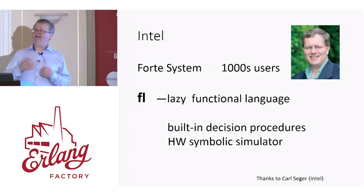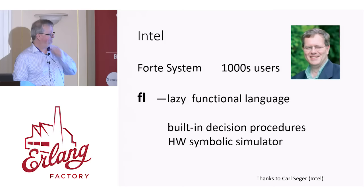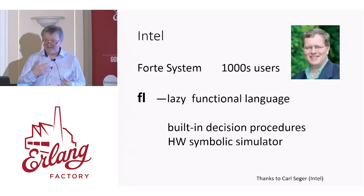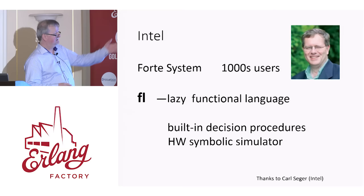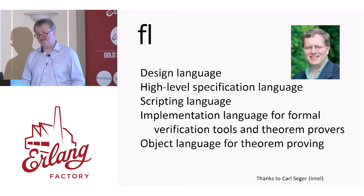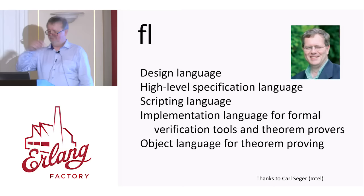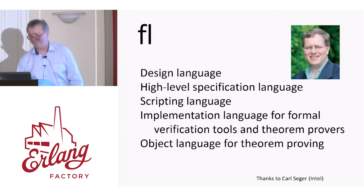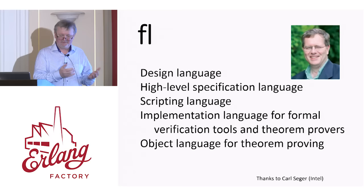So how did Intel improve? Carl Seeger, who was working for them, designed their own lazy functional language called FL, which had some built-in proof techniques, and they started designing their processors with functional programming. This system has thousands of users within Intel — they used FL as a design language, a specification language, a scripting language; they built theorem provers in it and proved things about FL programs. So why hasn't there been a second Pentium bug? It's thanks to functional programming, in part at least. Functional programming for hardware has been a very successful application area that many people don't know so much about.